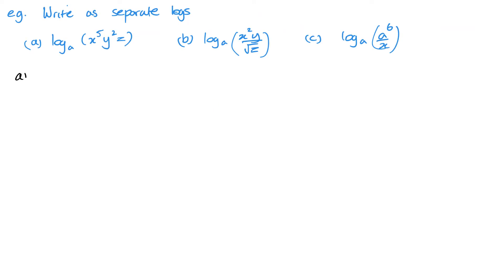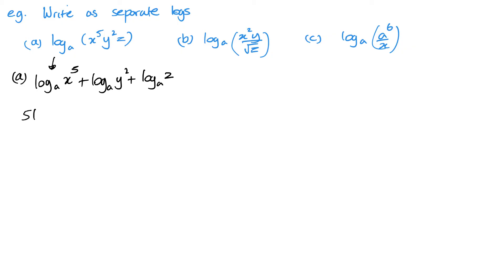Now with this example we are just going to start separating them out — the reverse of what we just did. We've got multiplication: x to the 5 times y squared times z. Separating them out gives log of x to the power 5 plus log of y squared plus log of z, all to base a. Then using the power rule, we rewrite this as 5 log x to the base a plus 2 log y to the base a plus log z to the base a.